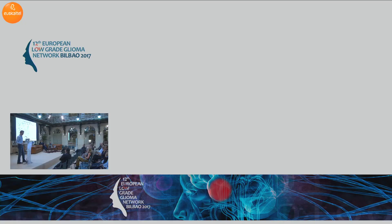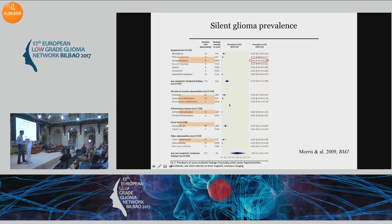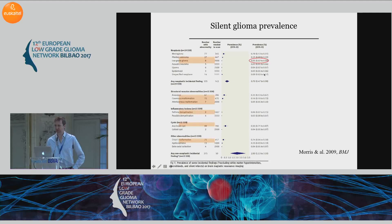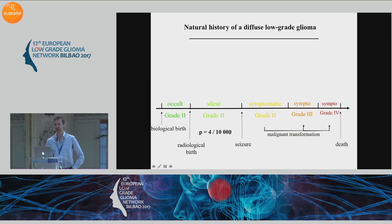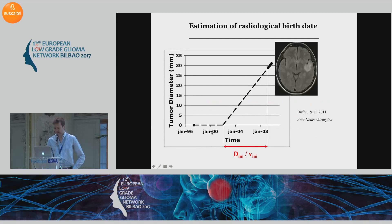Regarding this silent period, we don't know that much, but from MRIs performed in healthy individuals for different reasons — like functional MRI studies, or EEG, or whatever — we know that the prevalence of silent glioma is about four cases per 10,000 people. So it's not so infrequent, not so exceptional to have a silent glioma without knowing it.